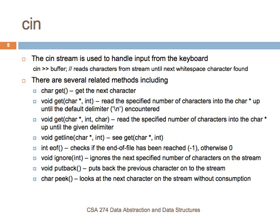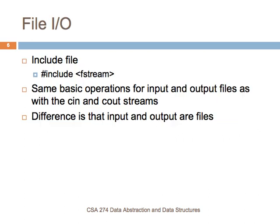The Fstream library is used to do file input and output, so you'll need to include Fstream. You also need to make sure that you write 'using namespace standard' in order for this to work. You get some of the same basic operations for input and output files as you had with Cin and Cout streams. The difference, of course, is that you're dealing with files rather than the keyboard and the display.